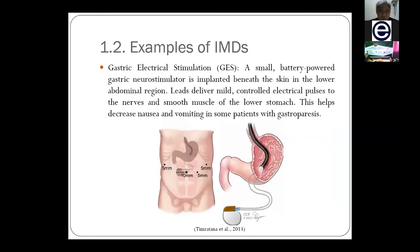We also have gastric electrical stimulation, or GES. This is installed for patients who have problems digesting food — a condition known as gastroparesis, where patients cannot empty the food in their stomach and feel nausea or vomiting. To remedy this, doctors install GES near the lower part of the abdomen. The device exercises the muscles near the stomach to help digest the food.